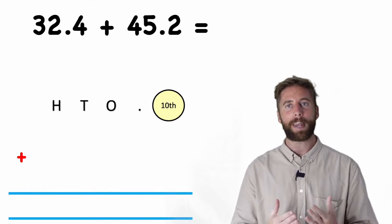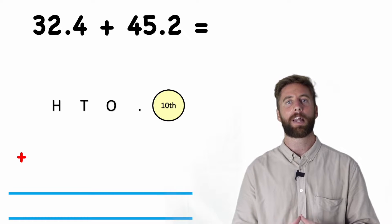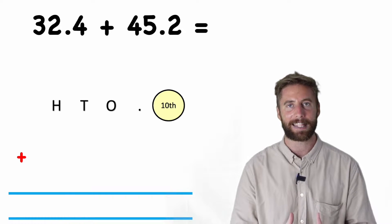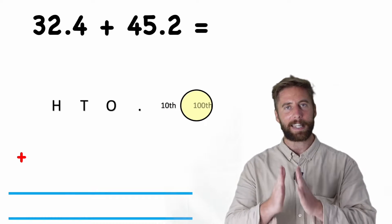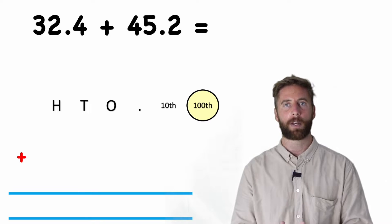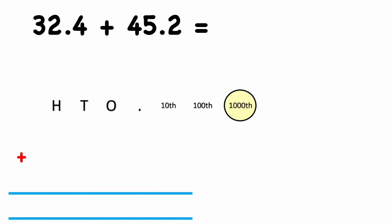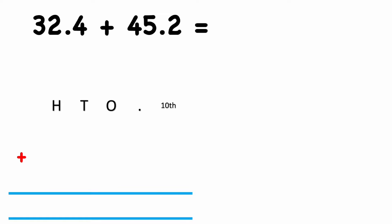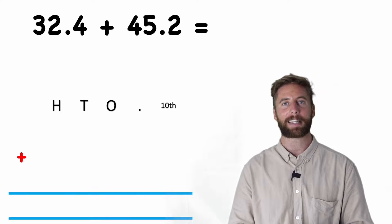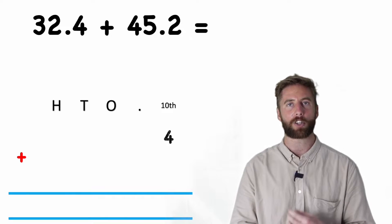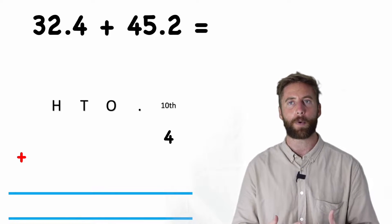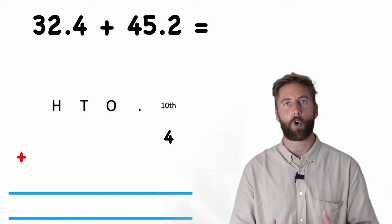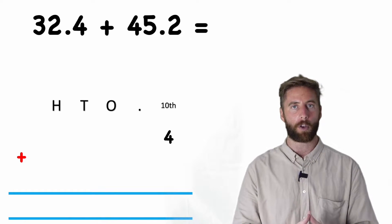The column next to the decimal point is going to be the tenths column. The next column would be the hundredths column, and then thousandths, ten-thousandths, and so on — because this column represents ten parts of one number. So in here we have four tenths of one.